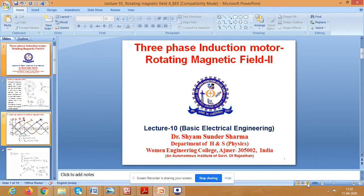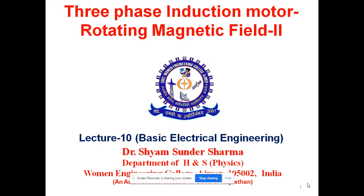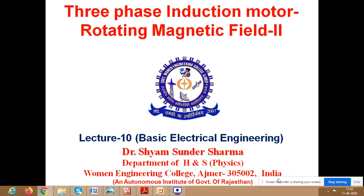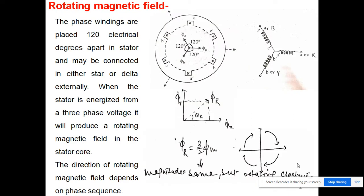Good morning students. This is the 10th lecture of the series on electrical machines. Today we will discuss the rotating magnetic field, Part 2. In yesterday's class we discussed the rotating magnetic field using the analytical method to calculate the resultant rotating magnetic field and its direction.